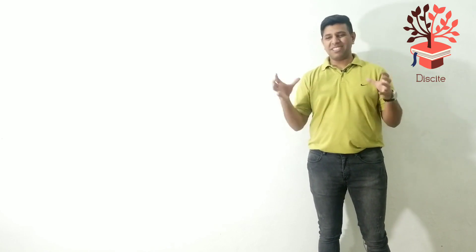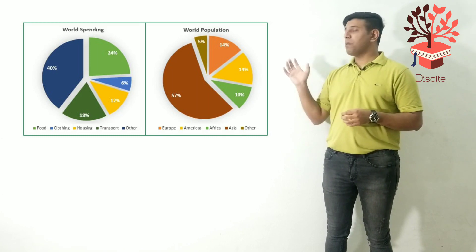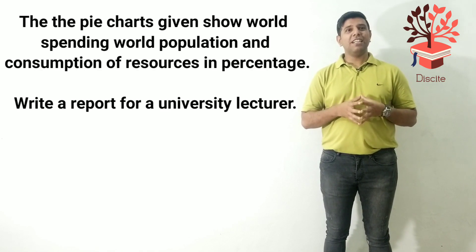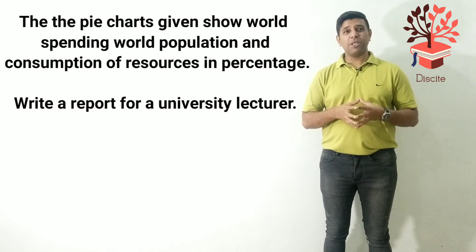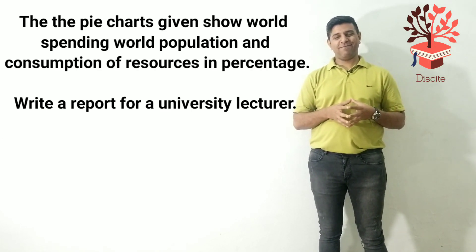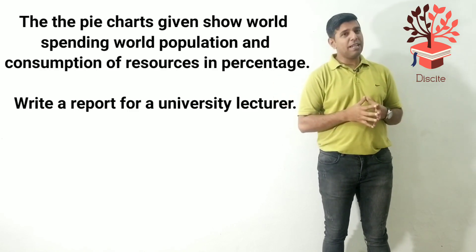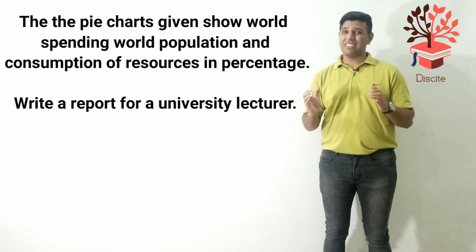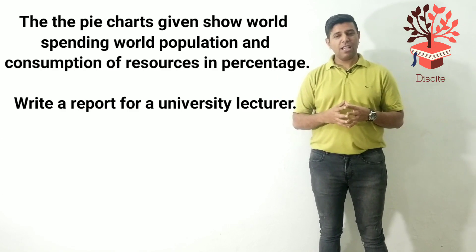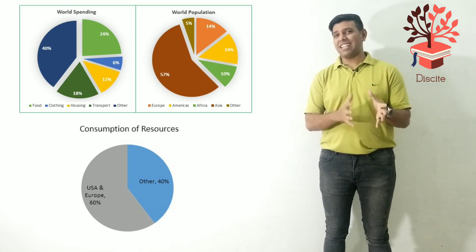So you need to look at things like doubled, trebled, halved, one third. Please pay attention to these connections because they are very important for the pie charts. Now let's have a look at the pie chart we have today and start with the question. The pie charts given show world spending, world population and consumption of resources in percentage. Write a report for a university lecturer. When you're writing a report you have to summarize the information, talk about the main features, and if you can make comparisons, perfect. We cannot talk about each and everything in detail — we have to select and report things.